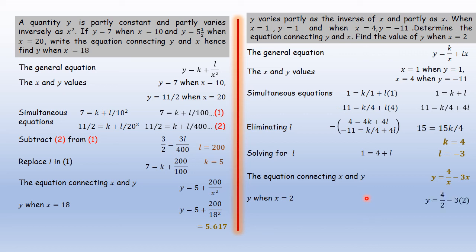The last part, we're told, find y when x = 2. So we just need to replace the value of x with 2 in this equation. Putting x = 2, we have 4/2 - 3(2), which is 2 - 6, and gives us the value as -4. And that is the answer desired in that particular question.